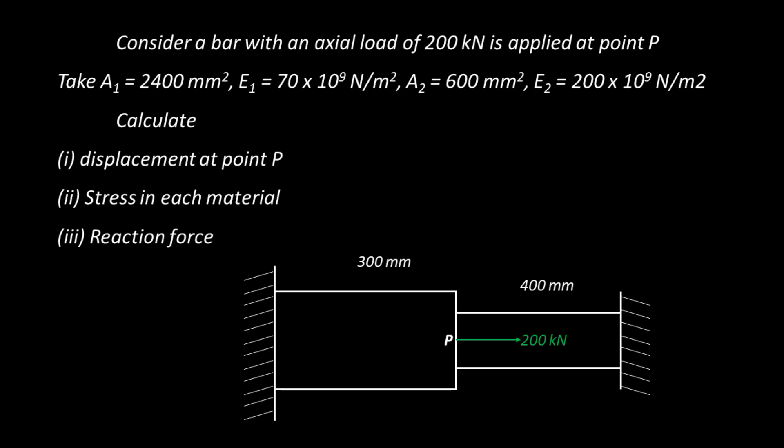Consider a bar with an axial load of 200 kN applied at point P. The given data is: area of cross section 1 is 2400 mm², Young's modulus is 70 × 10⁹ N/m². Area of cross section 2 is 600 mm² and Young's modulus is 200 × 10⁹ N/m².